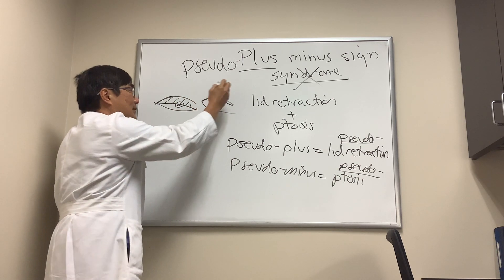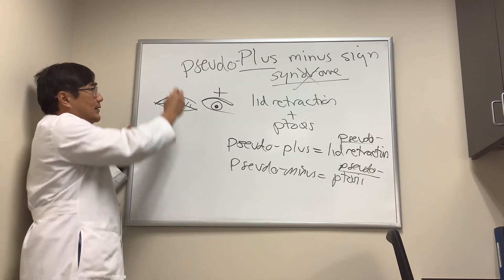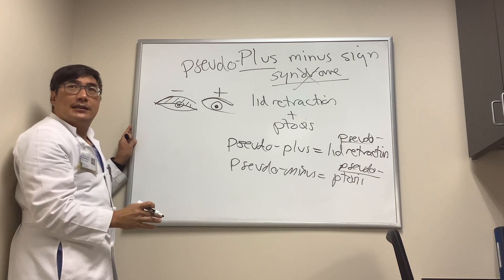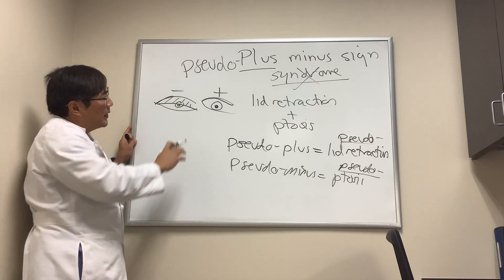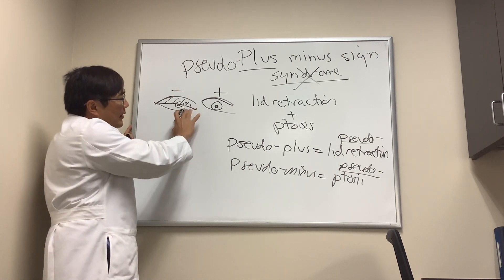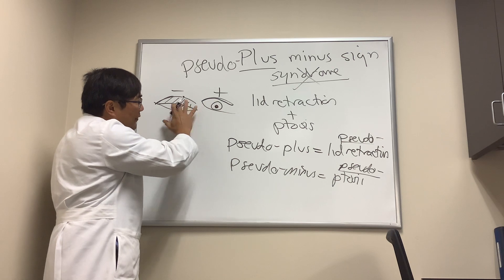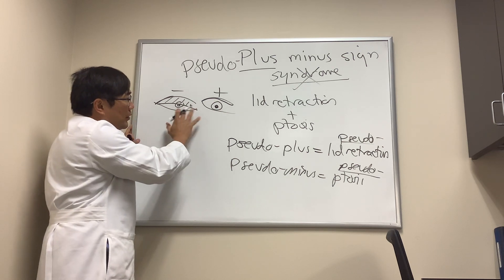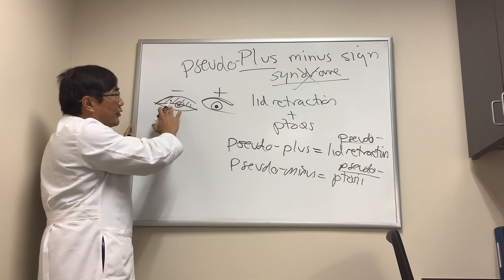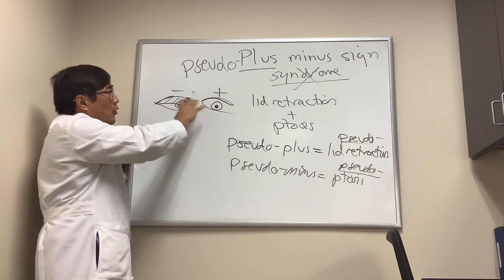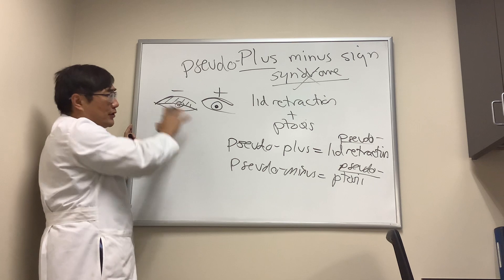So this is a plus — the lid retraction — and this is the minus — the ptosis. The question is, are both of these true: true ptosis plus true retraction, or is one a pseudo? And if one is a pseudo, which one is it?